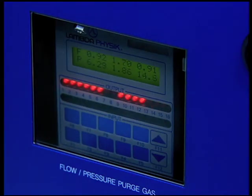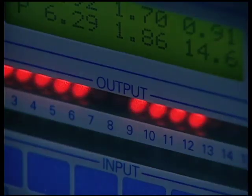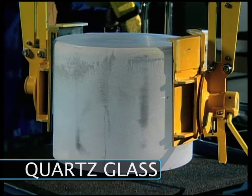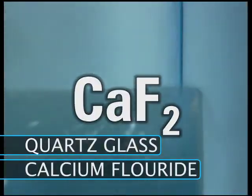However, for the 193 nanometer lithography, the only option in the lens is quartz glass and a crystal material called calcium fluoride.